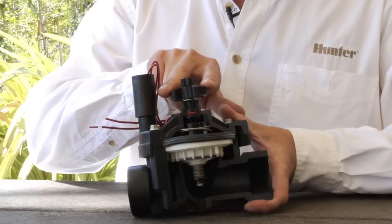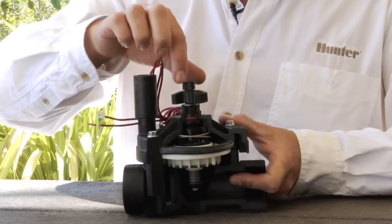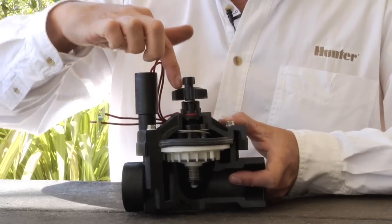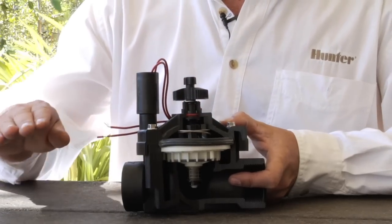On top of the flow control screw, we have what's called the manual bleeder screw. And opening the manual bleeder screw allows the water to evacuate out through that hole, and it allows the diaphragm to open, thus the valve will open with it.